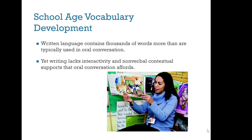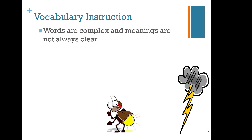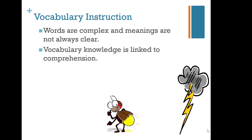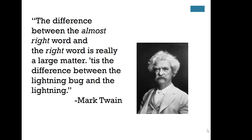At school age, vocabulary development takes a shift because children are exposed to more written language. Written language contains thousands of words more than what's used in typical oral conversation, but writing lacks the interactivity and nonverbal contextual support that oral conversation affords. There are three main points to keep in mind for vocabulary instruction: first, words are complex and meanings are not always clear; second, vocabulary knowledge is linked to reading comprehension; and third, context clues to determine word meaning are not intuitive for every reader. Mark Twain reminds us that the difference between the almost right word and the right word is a large matter — it's the difference between the lightning bug and lightning.